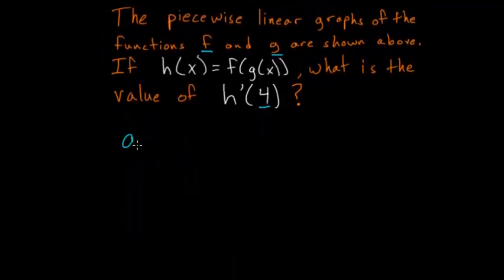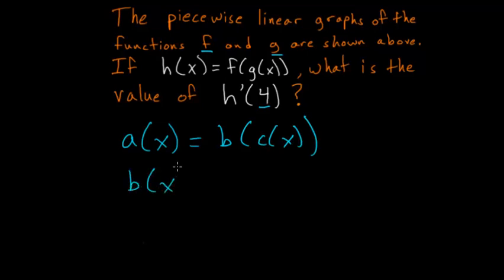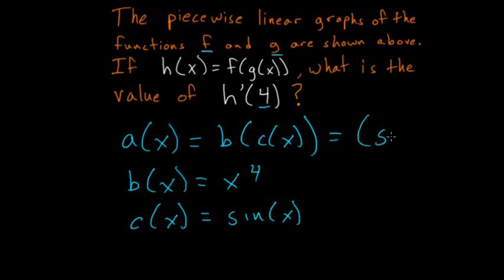Let's say we have a(x), which is b(c(x)), where b(x) is equal to x to the fourth, and c(x) is equal to the sine of x. So looking at this, putting c(x) into b(x), we have the sine of x all raised to the fourth power. And the way to take the derivative of this: